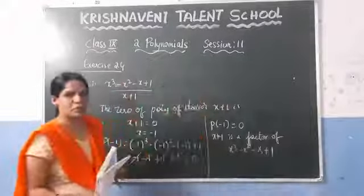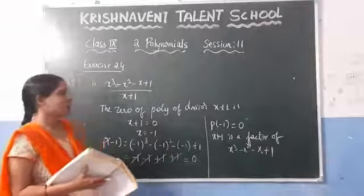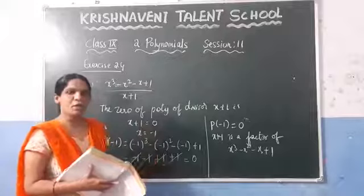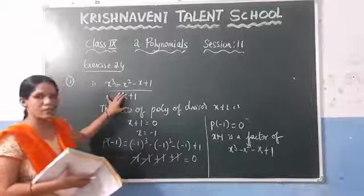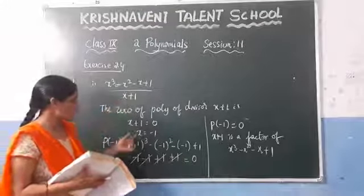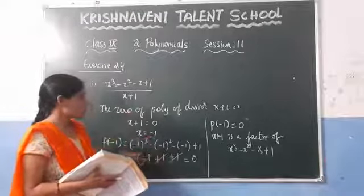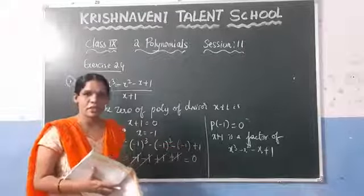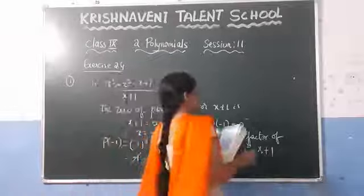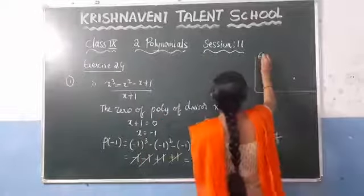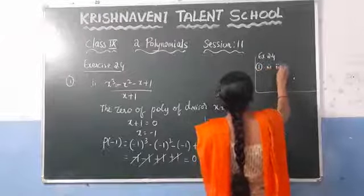To check whether something is a factor, find the remainder using the remainder theorem — find the zero of the divisor, substitute that value into the dividend polynomial, and if you get 0 it is a factor. For the second and third bits of question 1 in Exercise 2.4, you can do the same — those are your homework.